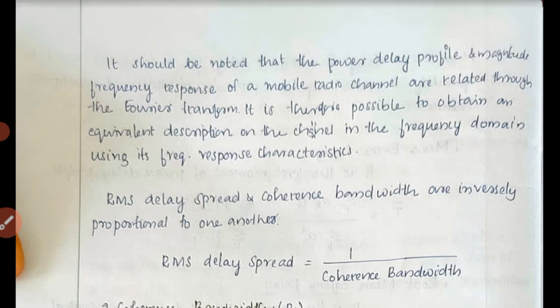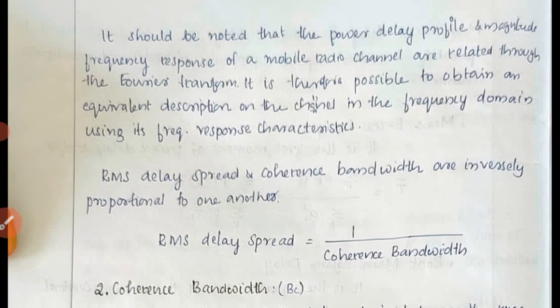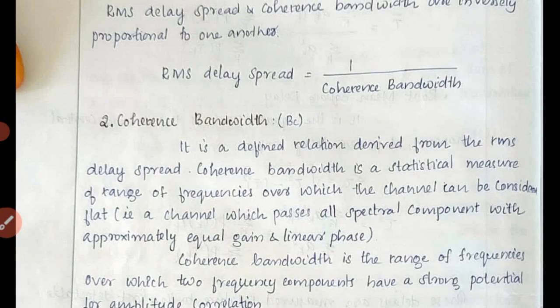It should be noted that the power delay profile and magnitude frequency response of the mobile radio channel are related through the Fourier transform. It is therefore possible to obtain an equivalent description of the channel in the frequency domain using its frequency response characteristics. The RMS delay spread is equal to 1 divided by the coherence bandwidth.